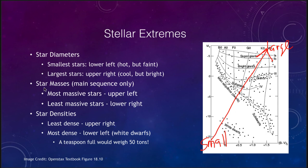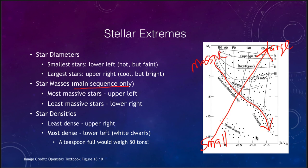Star masses — this applies to the main sequence only; we cannot determine masses for white dwarfs or giant stars as those are completely different — but along the main sequence, mass decreases as you move downward. The densities of stars are least dense in the upper right with the largest stars, and most dense in the lower left with the white dwarf stars.